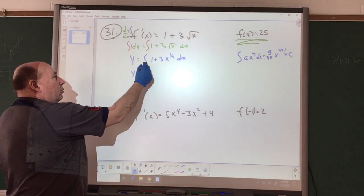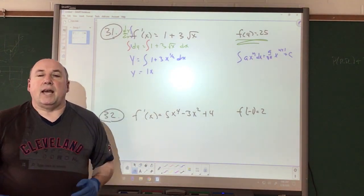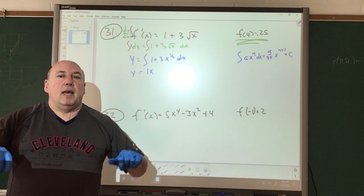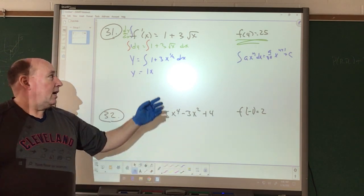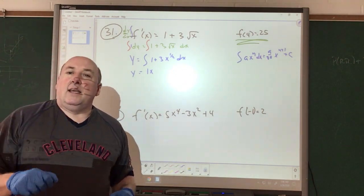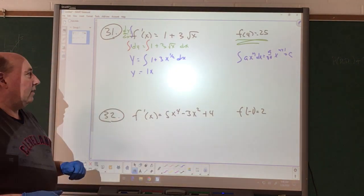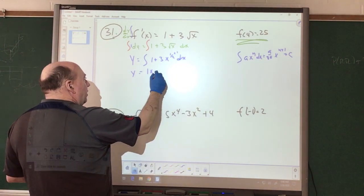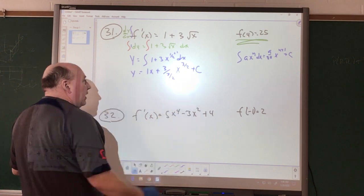So we have Y equals 1X. When we take the antiderivative of a constant or indefinite integral of a constant, I get the constant times X. We add 1, so we have 3/2 there. So we have plus 3 divided by 3/2, X to the 3/2 power plus this value of C.